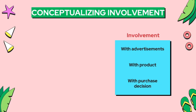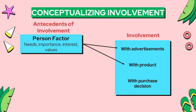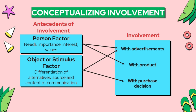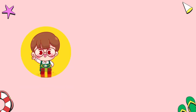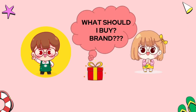High involvement is found in categories like houses and cars, or self-esteem-related products like clothing, and lower involvement in categories like house cleaners or hardware. The level of involvement may be influenced by one or more of three factors: the individual's determinants like motives, needs, interests, and values; the object or stimulus — the greater the product's differentiation, the greater the level of involvement; and the occasion of purchase — for example, when gifting to someone special, we are more careful about the product and brand we buy.